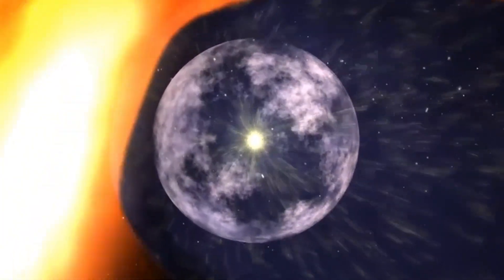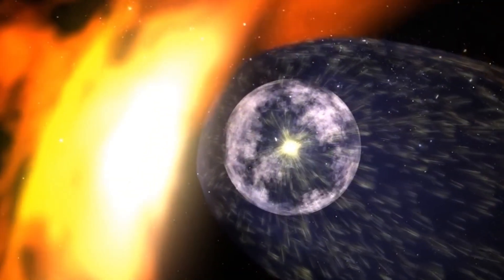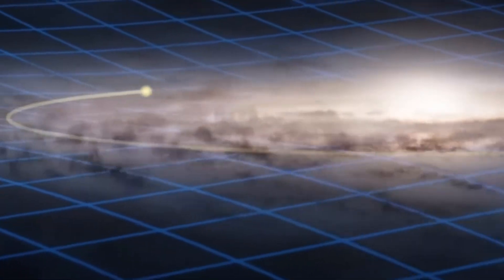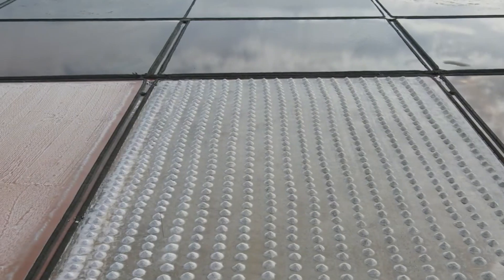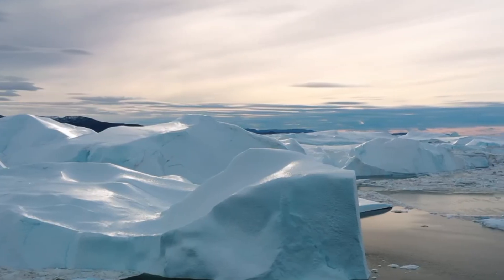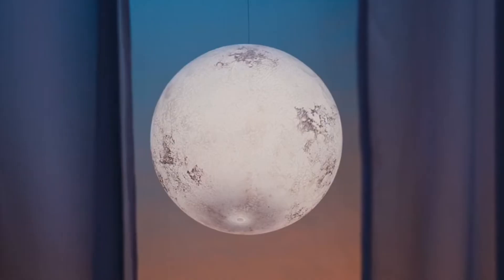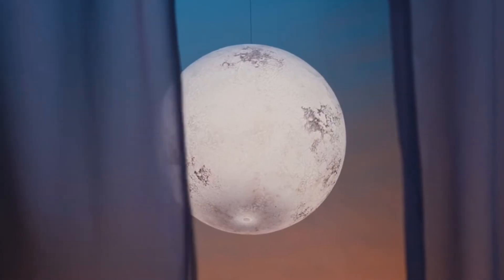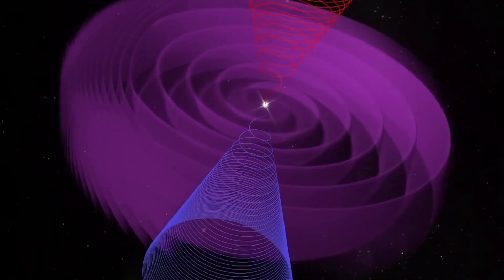Perhaps most revealing is how mainstream astronomy discusses the Milky Way itself. Our galaxy isn't a perfect flat disk either, but rather a complex three-dimensional structure with a central bulge, spiral arms, and a warped disk. Beyond this lies a galactic halo, a vast spherical region extending far above and below the galactic plane. This means the very galaxy we call home exhibits the same three-dimensional complexity that's deliberately downplayed when discussing our solar system. The pattern of simplification persists at every scale.